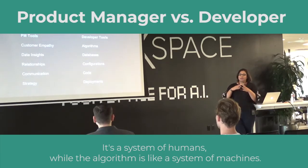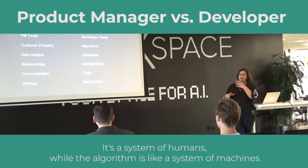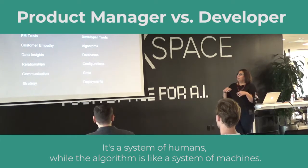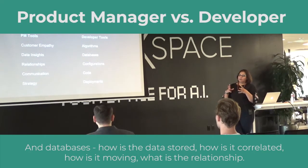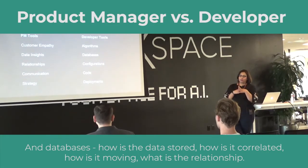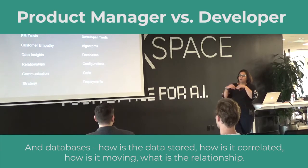It's a system of humans, while the algorithm is like a system of machines and databases — how is the data stored, how is it correlated, how is it moving, what is the relationship.